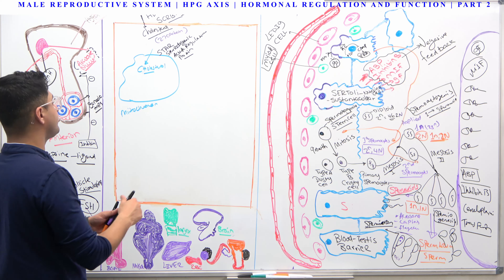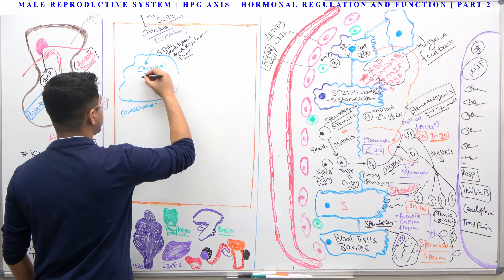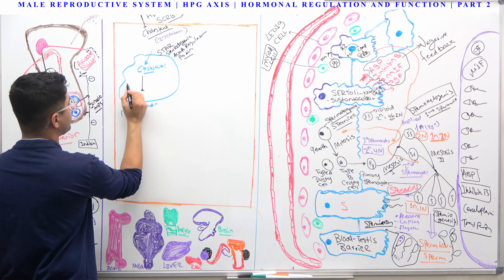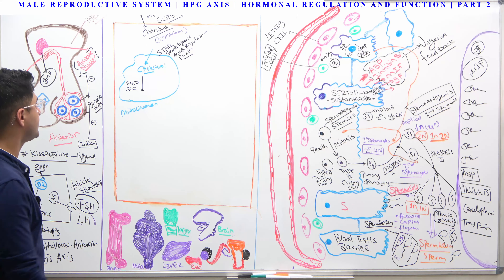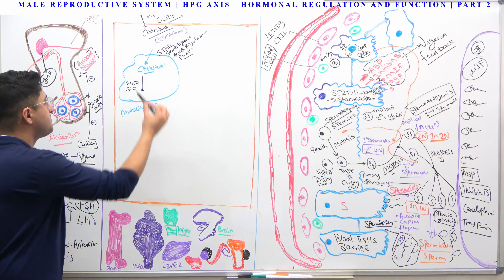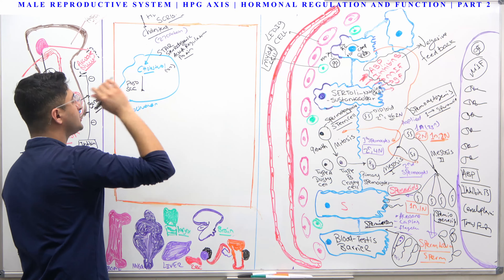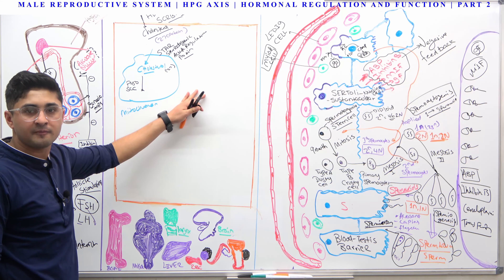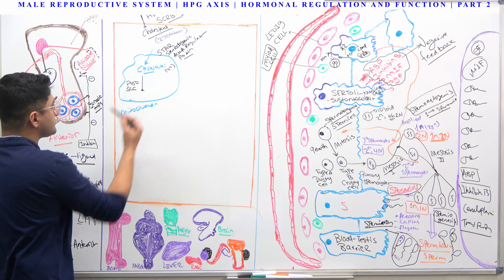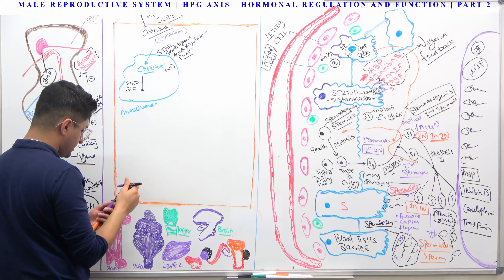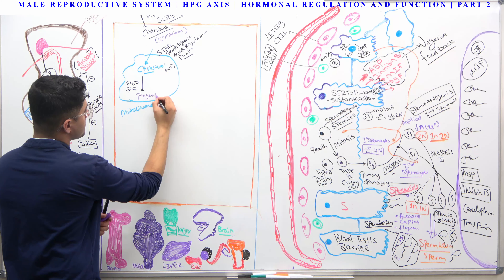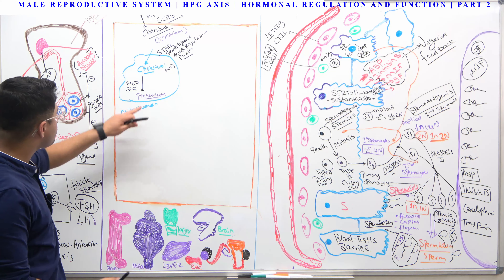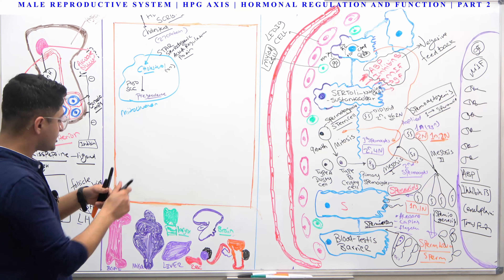Inside the mitochondria, the cholesterol encounters a very important enzyme called P450scc — a P450 enzyme, where 'scc' stands for side chain cleavage enzyme. Basically, the 27-carbon cholesterol molecule has its side chain removed, leaving only 21 carbons. This process requires this enzyme, and the resulting 21-carbon compound is called pregnenolone.